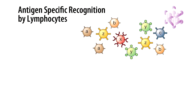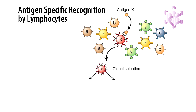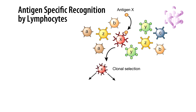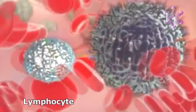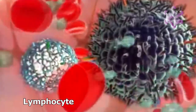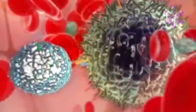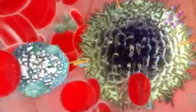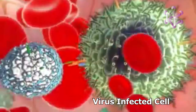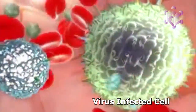A basic premise of immunology is that the antigen receptors on each individual lymphocyte are genetically programmed to recognize only a single antigenic specificity. This poses a constraint on virus-infected cells such that the effective engagement with a lymphocyte requires the infected cell to express multiple copies of the same antigen.